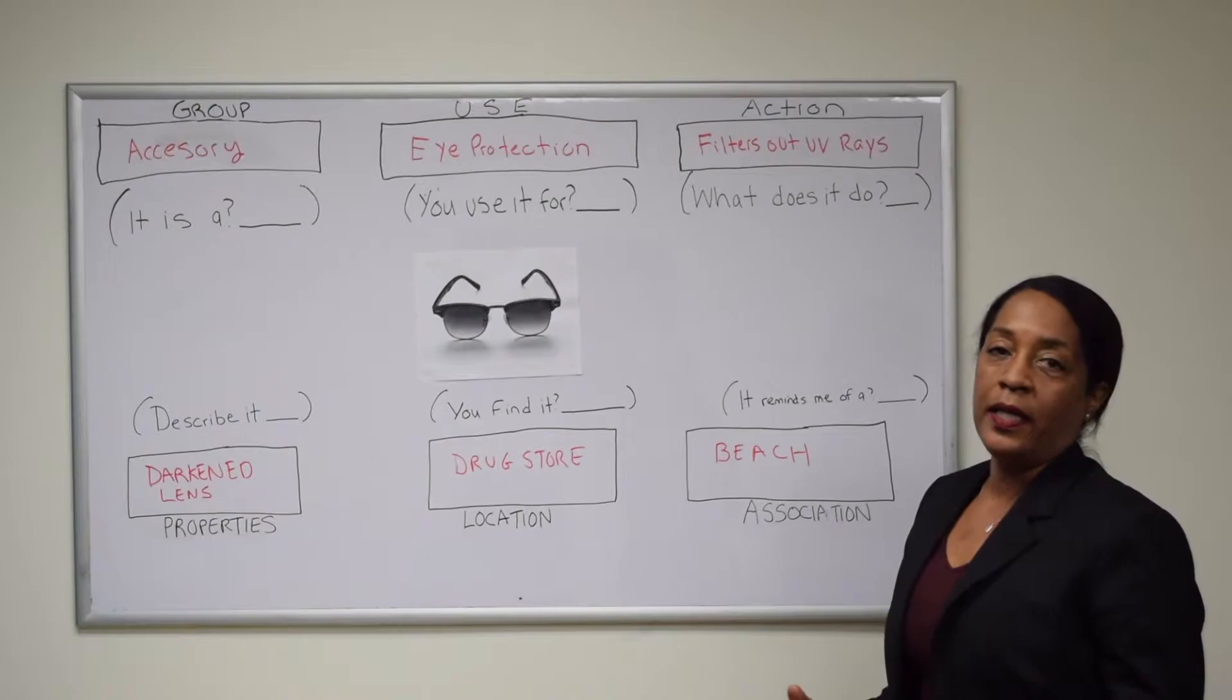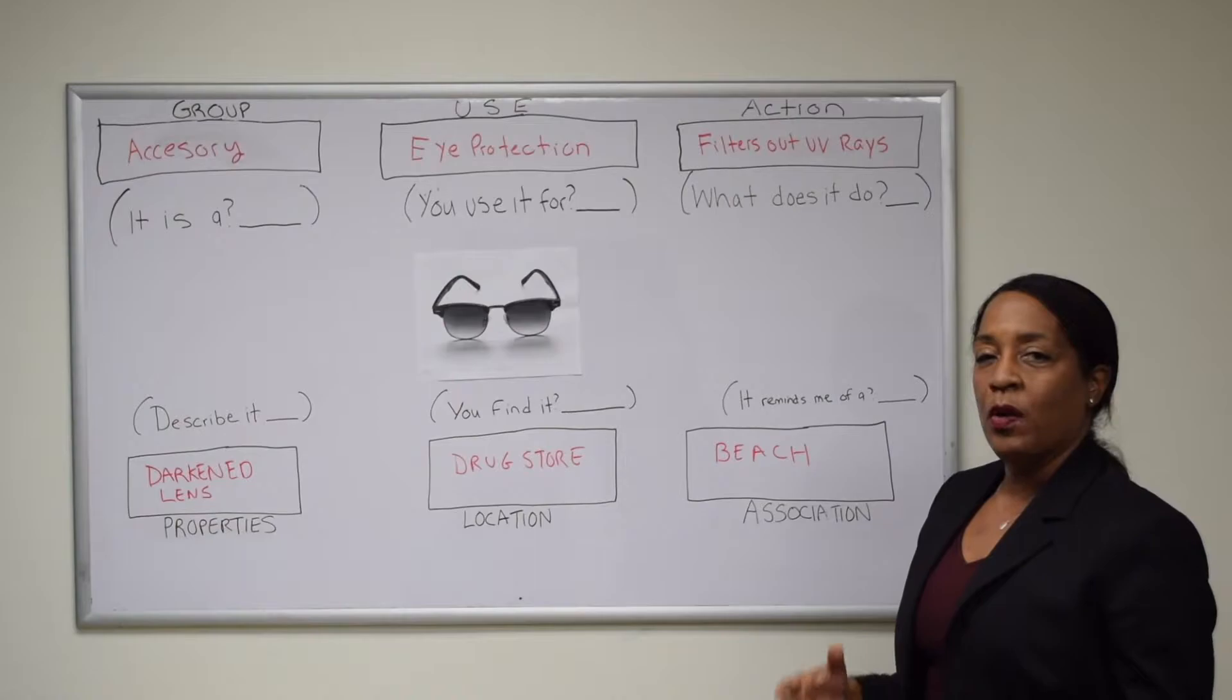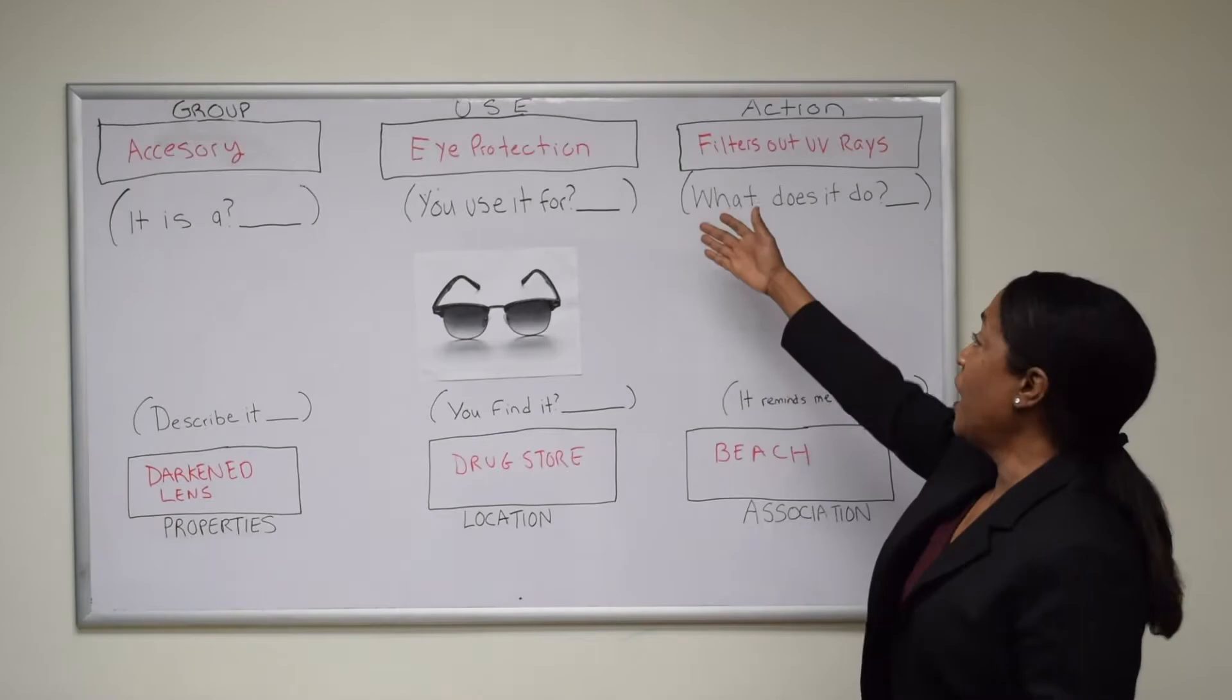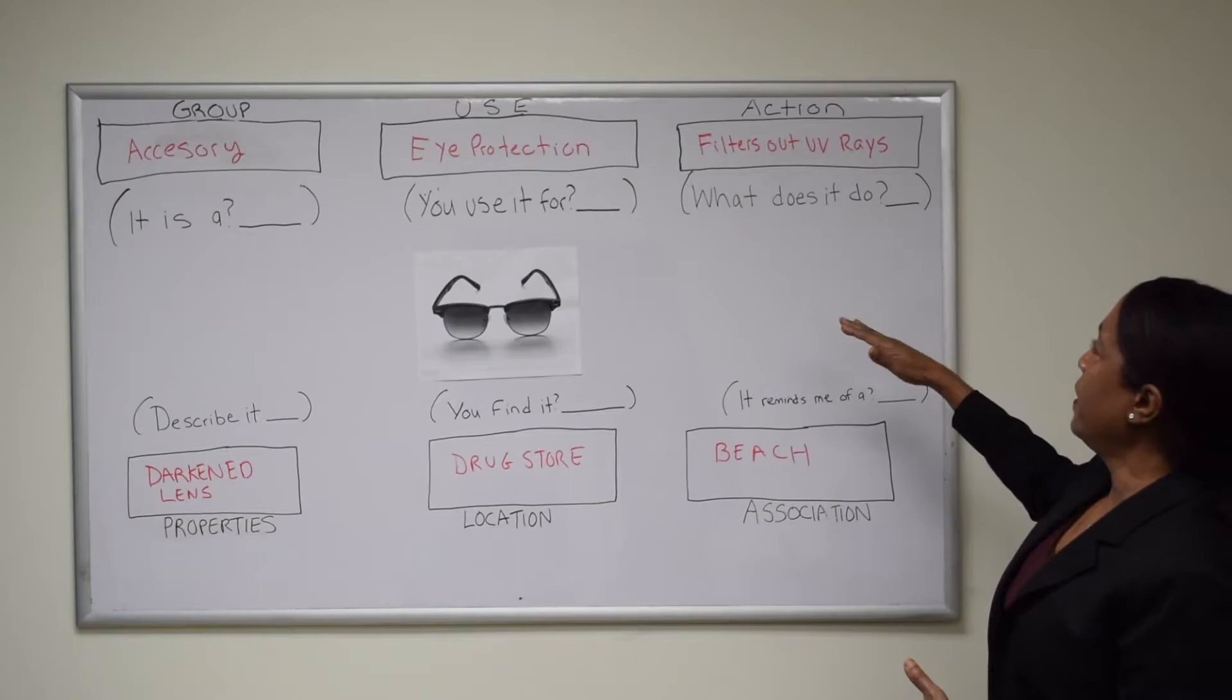It starts with 'it is a' which correlates with group. The patient would describe what category the item belongs to. So these are sunglasses, they would be an accessory. The second question is 'you use it for' - I wrote in some examples that a typical patient might say, like 'eye protection.' That question is correlated to the use of that particular item.